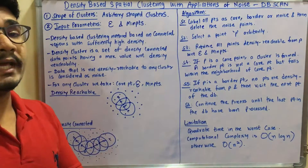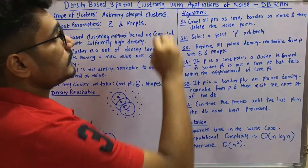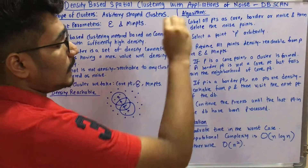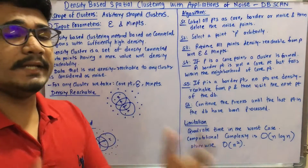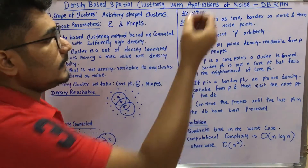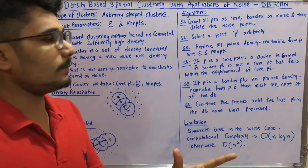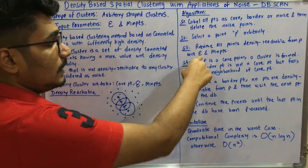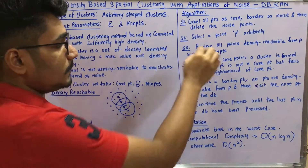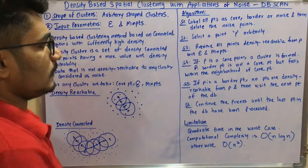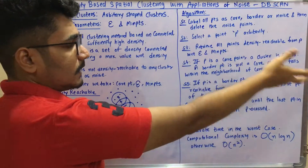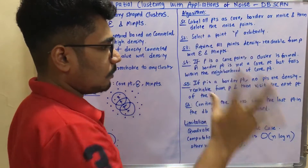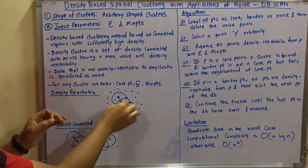The DBSCAN algorithm starts by labeling all points as core points, border points, or noise points, then deleting those noise points in the first step. Next, select an arbitrary point p from the dataset. You will then be left with core points and border points. Retrieve all points that are directly density reachable from p with respect to the input parameters — the maximum density-reachable distance and the minimum points. A cluster is found only if p is a core point.